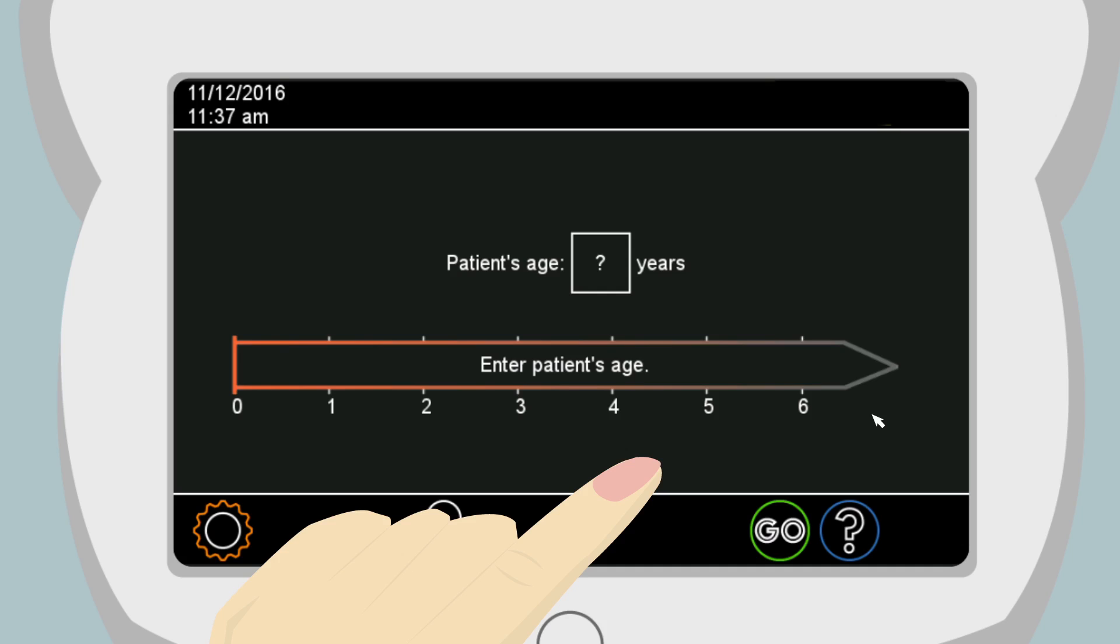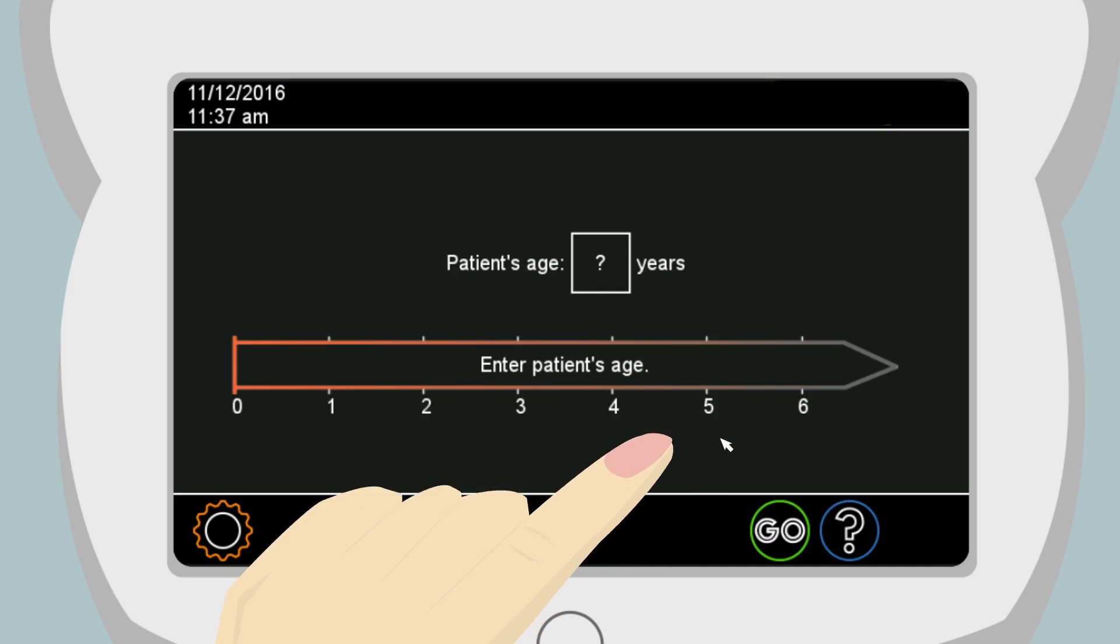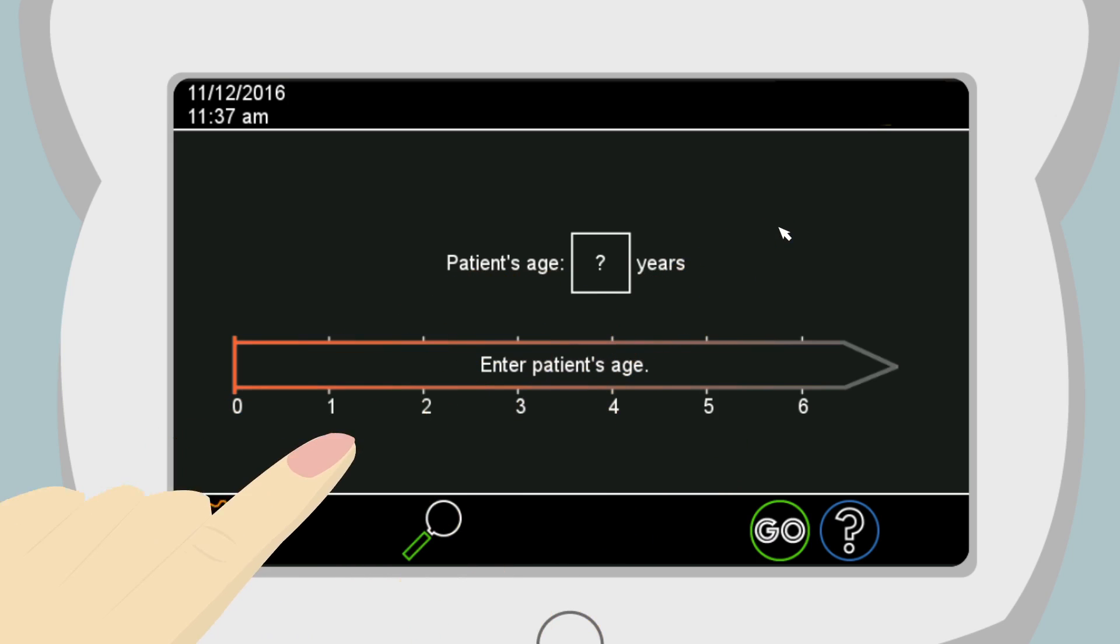If the device does not respond to the touch, the touch may have missed the button. The cursor arrow will show where the device sensed the touch.